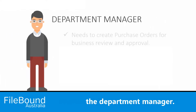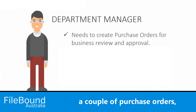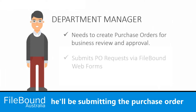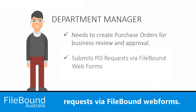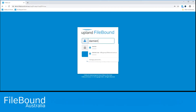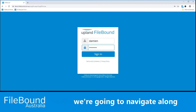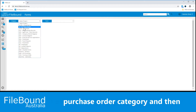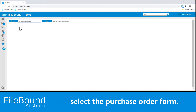Our process starts with the Department Manager. He's going to need to create a couple of purchase orders, and seeing that he's using the Filebound platform, he'll be submitting the purchase order requests via Filebound Web Forms. Just logging into Filebound here, we're going to navigate along to our Filebound Forms. He'll be able to select our Purchase Order category and then select the Purchase Order Form.